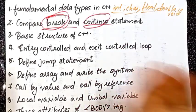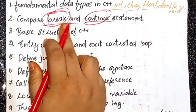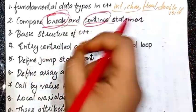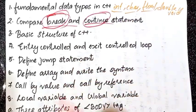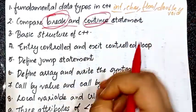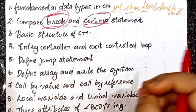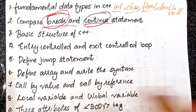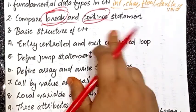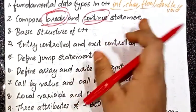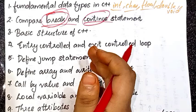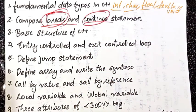The break statement terminates the current loop — it exits only the current loop. If the current loop is within another while loop, break affects only the internal loop. The continue statement is used to go back to the beginning of the loop.